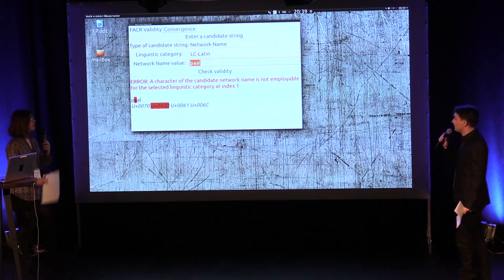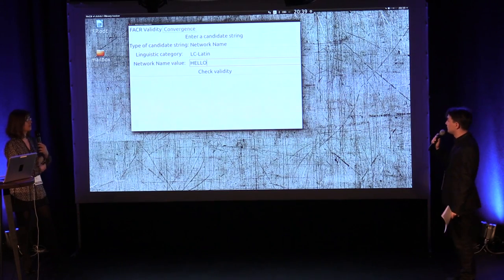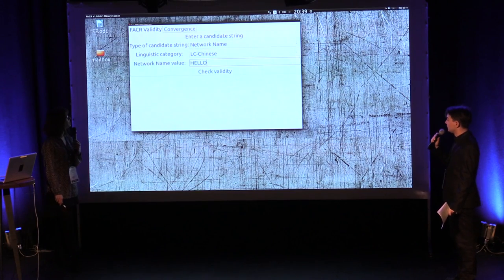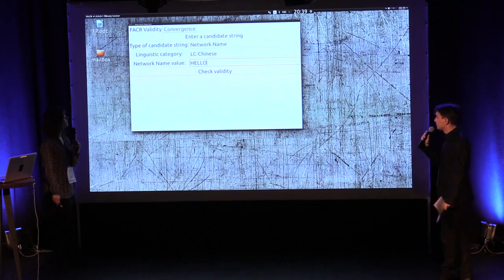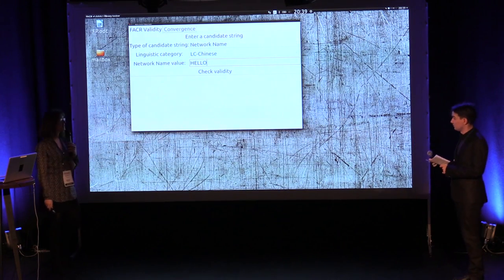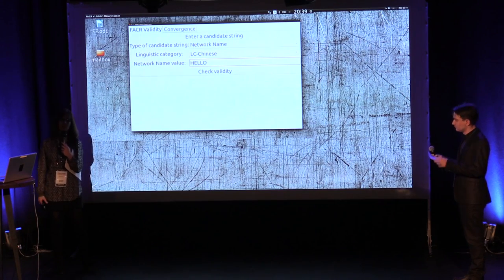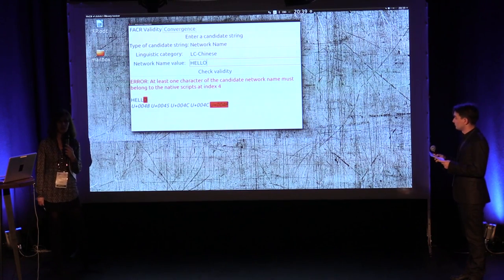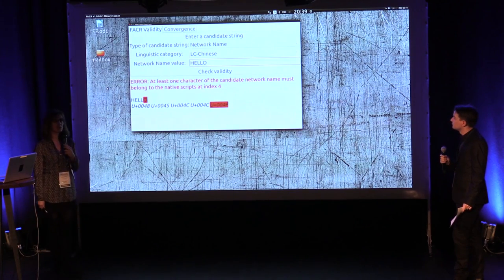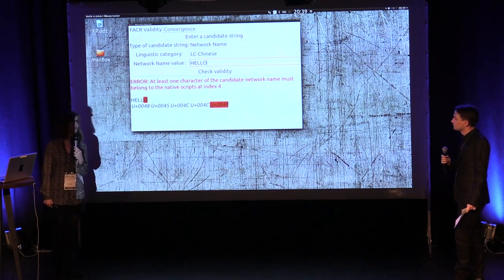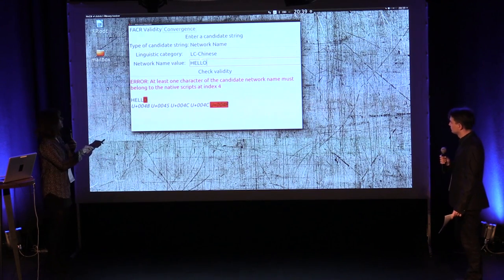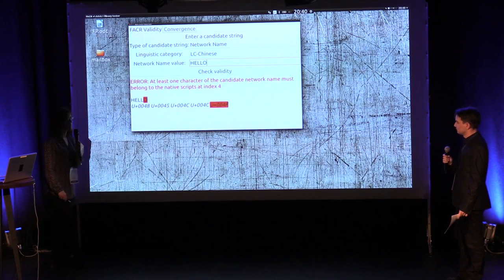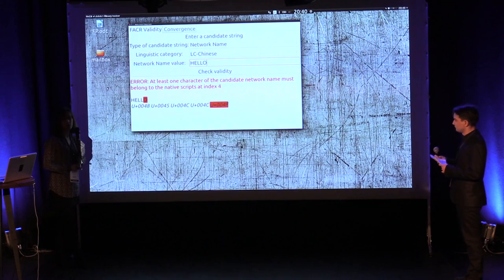Starting from this exception — what about someone using Latin characters while having chosen a Frogans address in the Chinese linguistic category? We have allowed a few Latin characters A to Z in both lower and upper cases because they are commonly used. But for a network name, the linguistic categories will impose context-based rules that require at least one Chinese character to be used in these addresses. You will not be able to register a network name without a native Chinese logogram character.